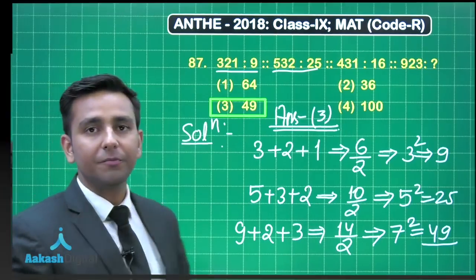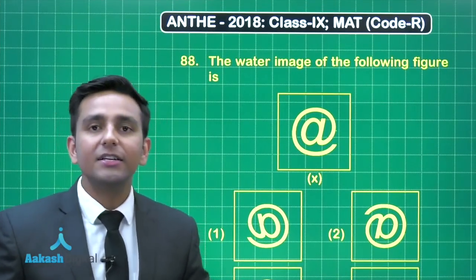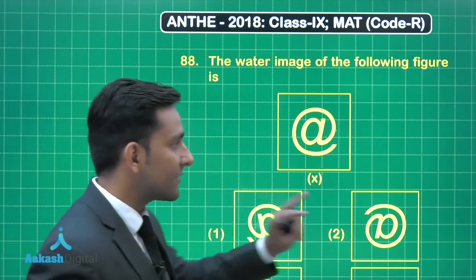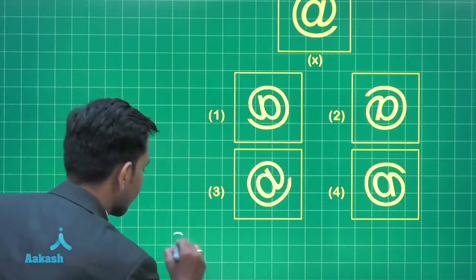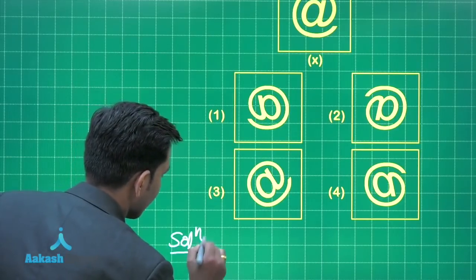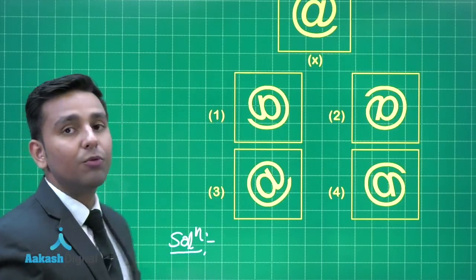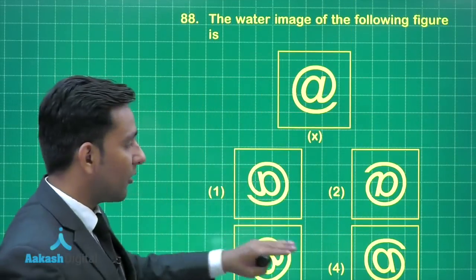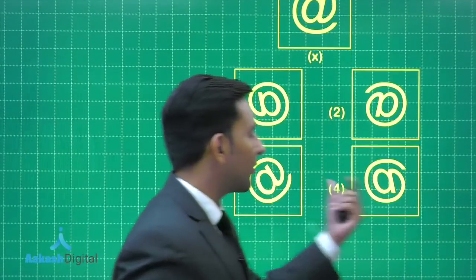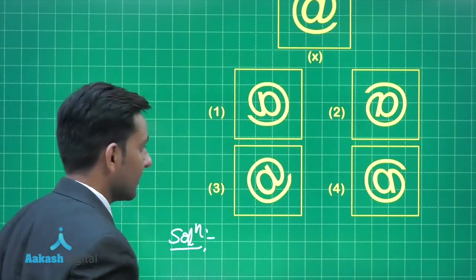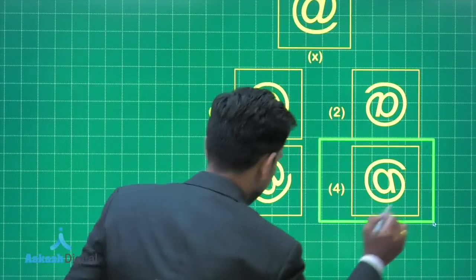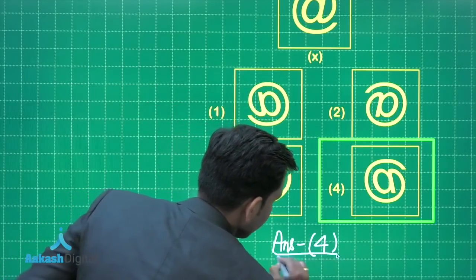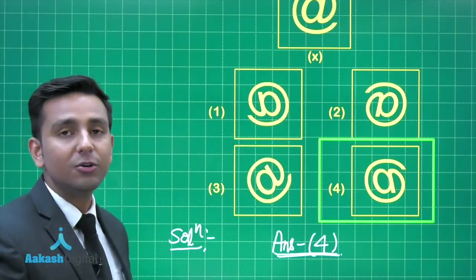Now let us discuss question number 88. In this question we have to find the water image of this figure X. Water image means vertically inverted figure. So you can see that when we vertically invert this figure X, we obtain option number 4, which is the correct answer for this question. I hope you understood this question.